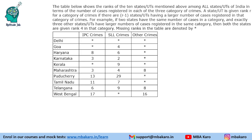The table gives the ranks of these 10 states among all states and union territories of India — not just among these ten, but all states — in terms of number of cases registered in each of the three categories. A state or union territory is given rank R for a category if there are R-1 states having a larger number of cases registered in that category. So rank 1 means no state is above it; rank 3 means there are 2 states above it; rank 6 means there are 5 states above it.